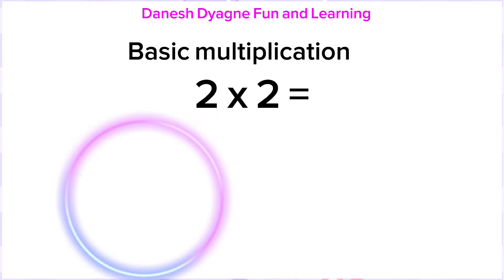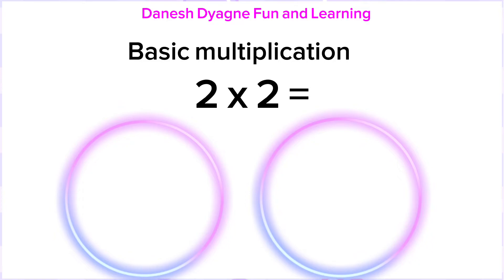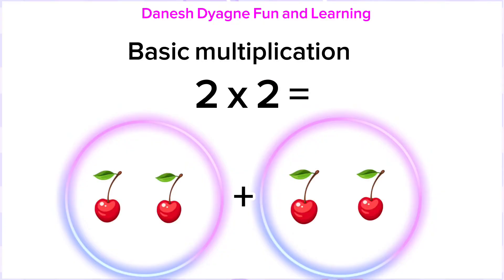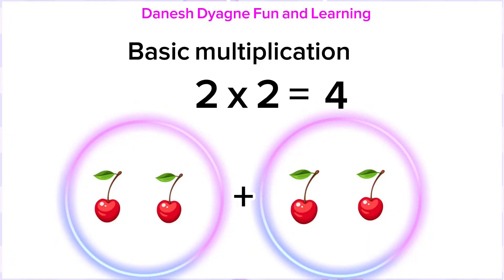One. Two. Now we are going to put two objects in each group. Now, how many cherries altogether? Let's count. One, two, three, four. So the answer is four. Now we know two times two is four.